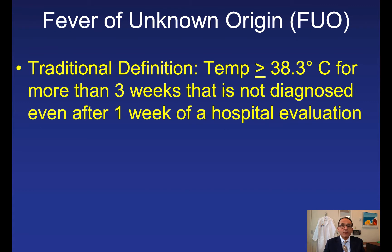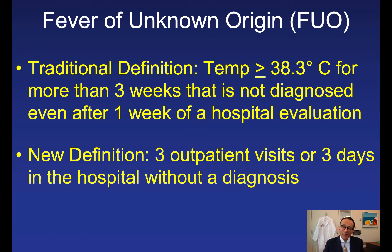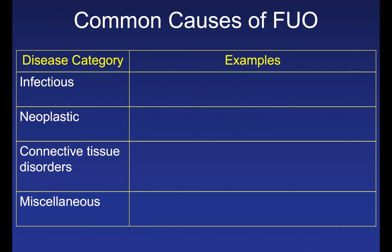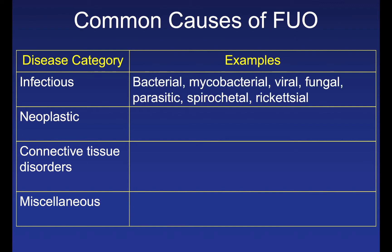If a patient has a fever of unknown origin (FUO), the traditional definition is a temperature of 38.3 or greater for more than three weeks that is not diagnosed after one week of hospital evaluation. However, the modern definition is three outpatient visits or three days in the hospital without a diagnosis. The disease categories that lead to FUO are the same that lead to fever in general.